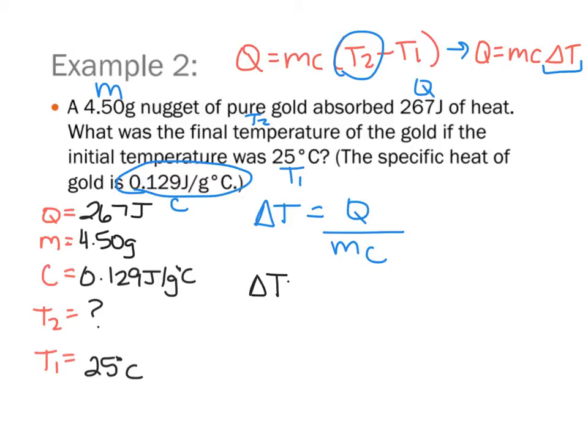So then when I go to plug in with my units, Q is going to be 267 joules on top. My mass was 4.50 grams, and my specific heat is 0.129 joules per gram degrees Celsius.